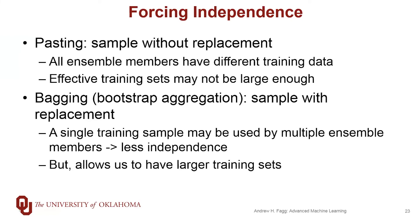With pasting, all of the ensemble members have access to different training data, which really forces independence. However, this means the effective training set size for individual models may not be large enough to learn a reasonable classifier. Bagging allows us to increase the effective training set size for individual ensemble members, but it does mean the different ensemble members get to see overlapping sets of training samples, pulling back from the independence idea. However, because they are not seeing a complete overlap, we do achieve some degree of independence. In practice, bagging is preferred, and we have a hyperparameter that controls how many samples are used in each ensemble member.